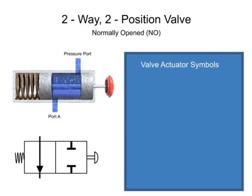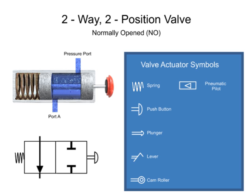Mechanical actuators change valve positions with springs, push buttons, plungers, levers, and cam rollers. Pneumatic pilots change valve position with a pressured air signal. Electric solenoids that change valve positions by directly moving the valve element are called direct solenoids. Electric solenoids that open small pilot valves and allow pressurized air to move the valve element are called solenoid controlled pilot operators.